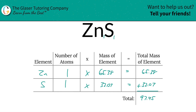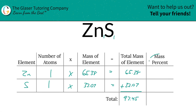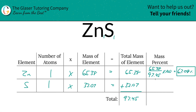Now that we know the total mass, I'm going to add a column to the table to help find those percents. To find the mass percent of zinc, take the total amount of zinc — 65.38 — and divide it by the total mass of the entire compound, 97.45, then multiply by 100. The percentage works out to be 67.09%. That's the percent by mass, or percent composition, of zinc in zinc sulfide.